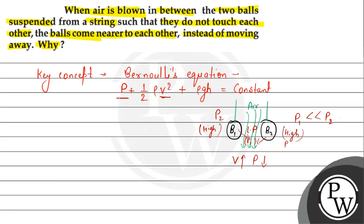So, we can say that when air is blown between the ball, a low pressure, a low pressure area is created between them, according to Bernoulli principle.